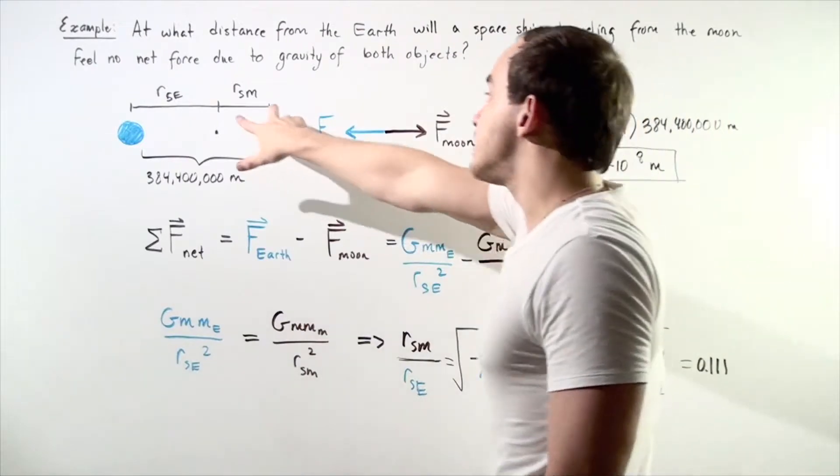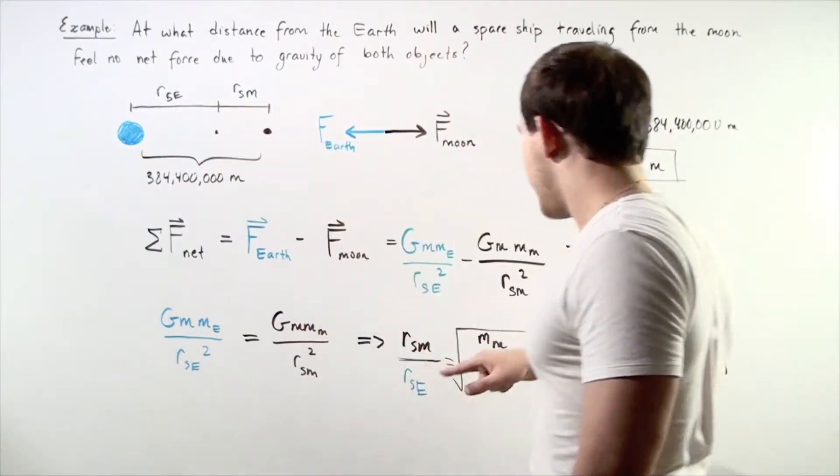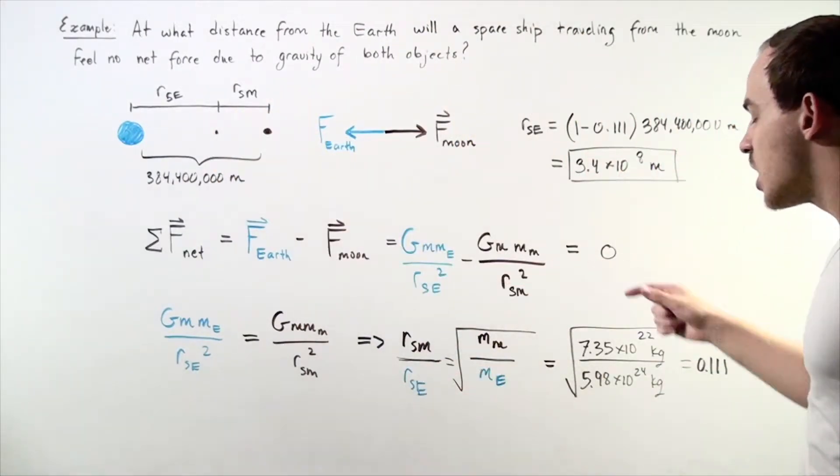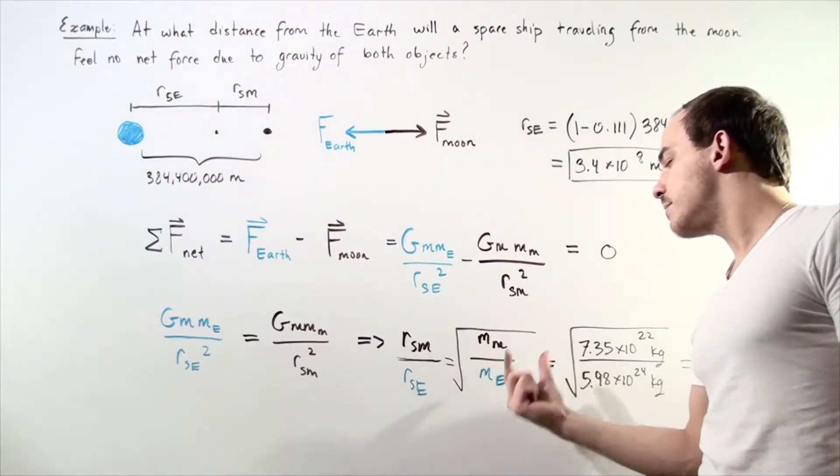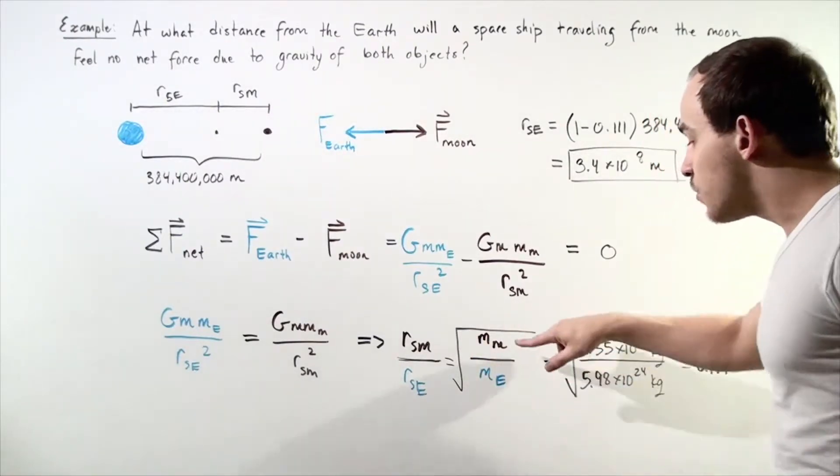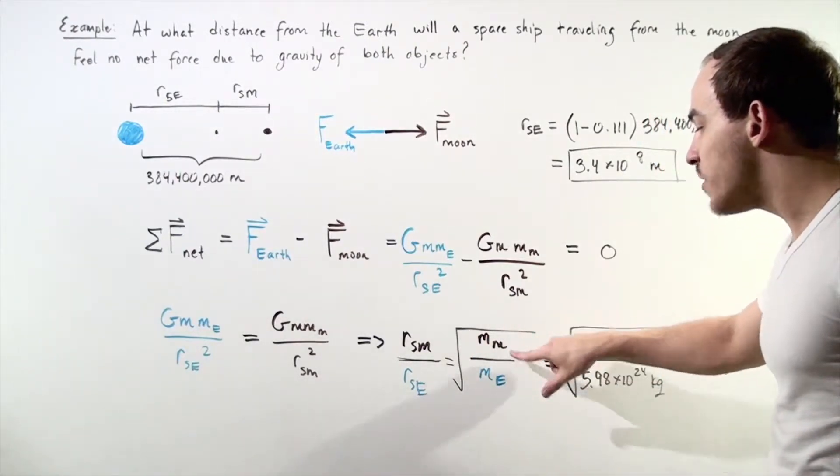The ratio of this length to this length is equal to the square root of the mass of the Moon divided by the mass of the Earth. These are constants, and we know what they are.